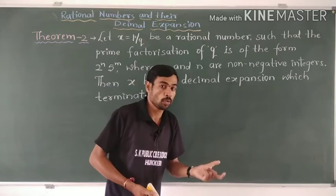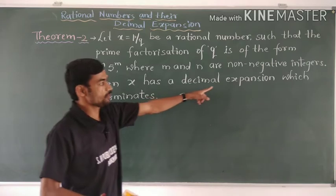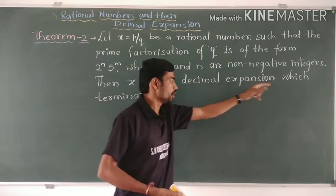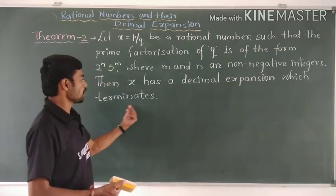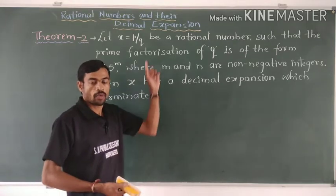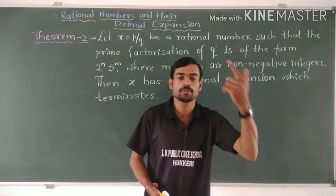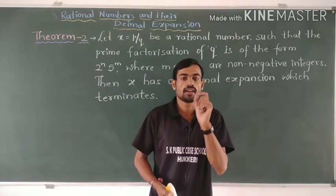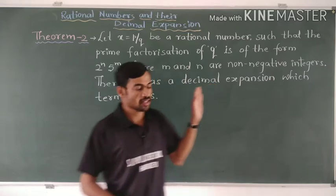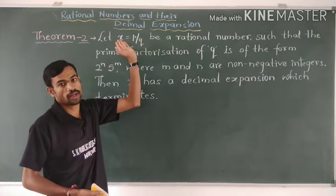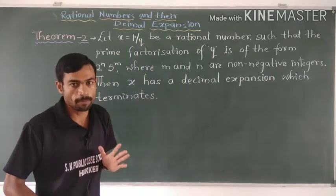Then what we have to prove? Then the decimal expansion of x terminates. Whatever rational number we have taken, its decimal expansion is terminating. So this is the statement of Theorem 2 — that is, the converse of Theorem 1.